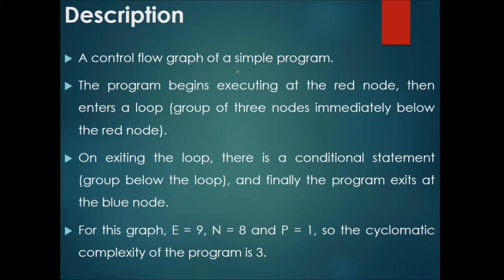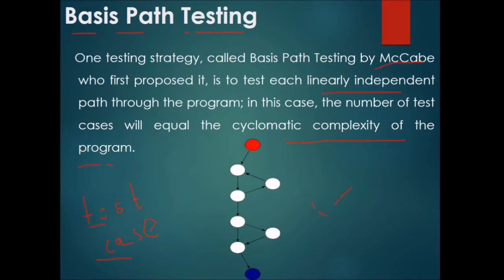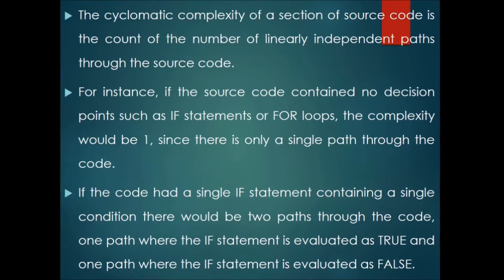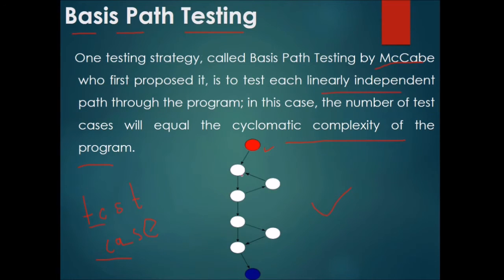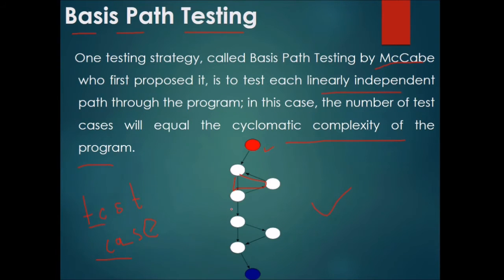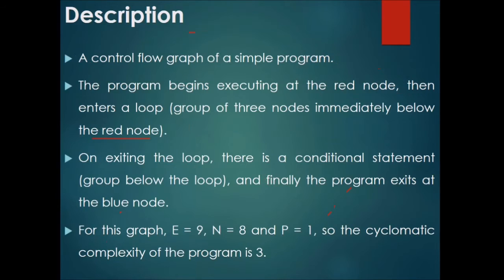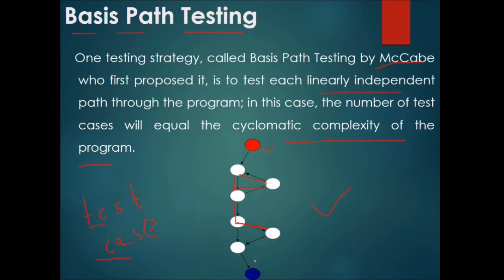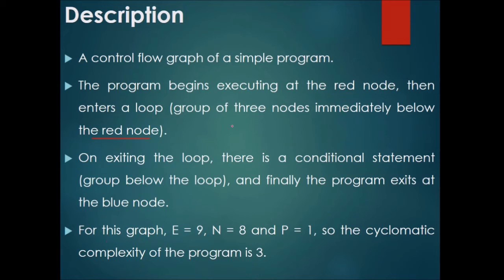Consider the control flow graph of a simple program: the program begins executing at a red node, then enters a loop. A group of three nodes immediately follows the red node, and on exiting the loop there is a conditional statement. Finally, the program exits at the blue node.